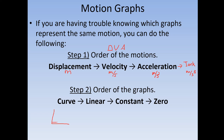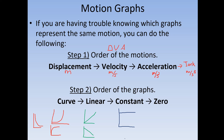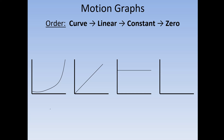Curved graphs are basically any exponential or parabolic graph. Linear graphs, as the name implies, are straight lines — positive or negative slope. Constant graphs refer to the value being constant, a horizontal line at some non-zero value. The zero graph is just a flat line at zero. Sometimes they differentiate these by saying 'constant non-zero graph,' since technically a graph remaining at zero is also constant.